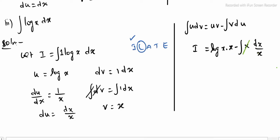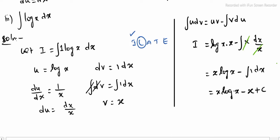So i equals log x into x minus integrating x into dx divided by x. Here x and x cancel. Left is integrating 1 dx, which gives x. Therefore, i equals x into log x minus x plus c. That is the sub-division 3 integral value.